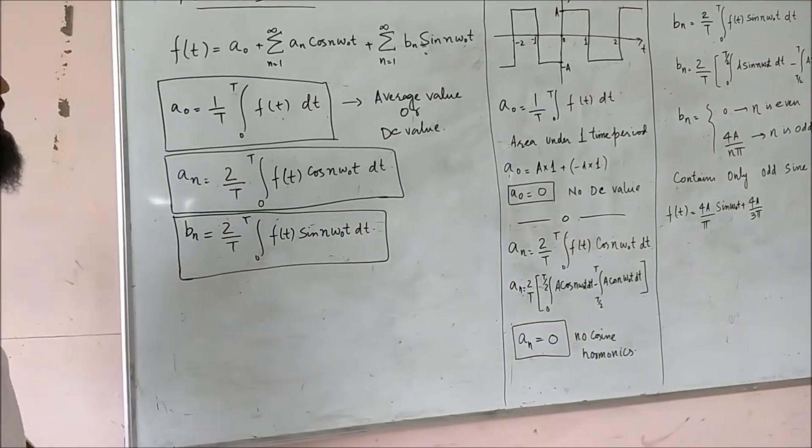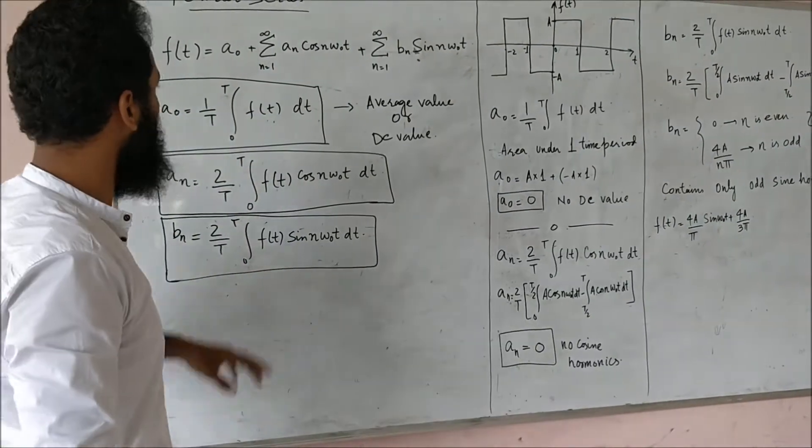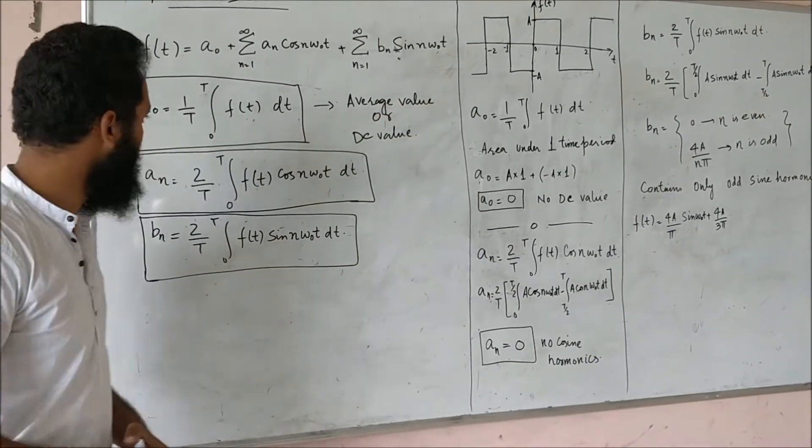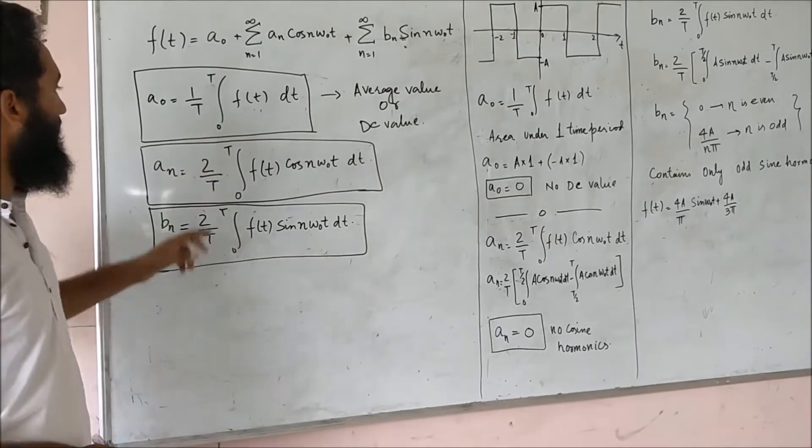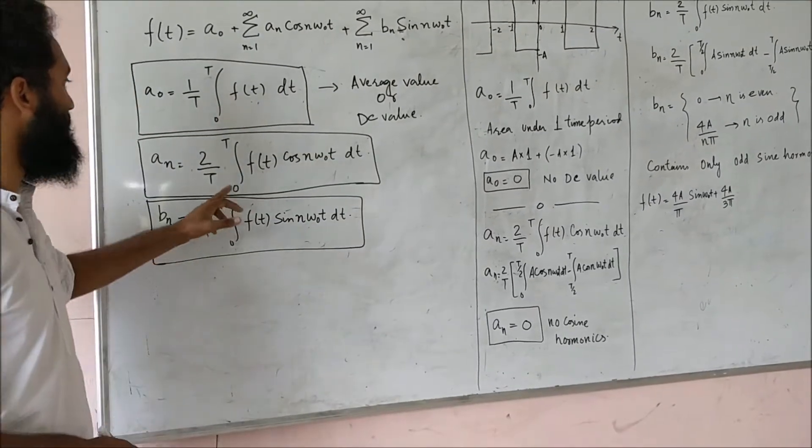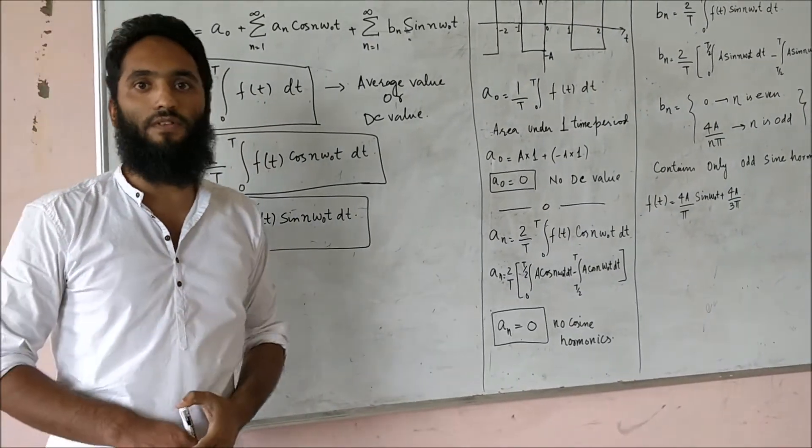Where this DC term can be written as 1 by T integration of f(t) dt from interval 0 to T and this is the average value or the DC value. This a_n, the weightage of these cosine harmonics, will be written as 2 by T integration of f(t) cos(n omega_0 t) dt under the same interval where omega_0 is the fundamental frequency.